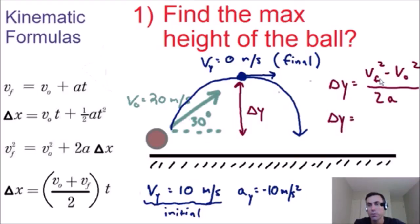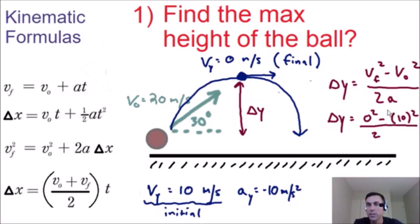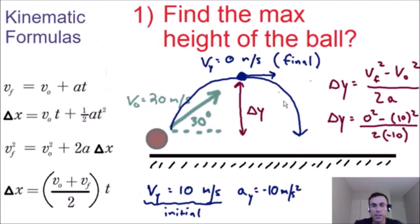Plugging everything in: delta y equals zero squared minus 10 squared, all over 2 times negative 10. That gives us zero minus 100 over negative 20, which equals negative 100 over negative 20, which equals positive 5. So our delta y equals 5 meters. The max height of the ball is 5 meters.